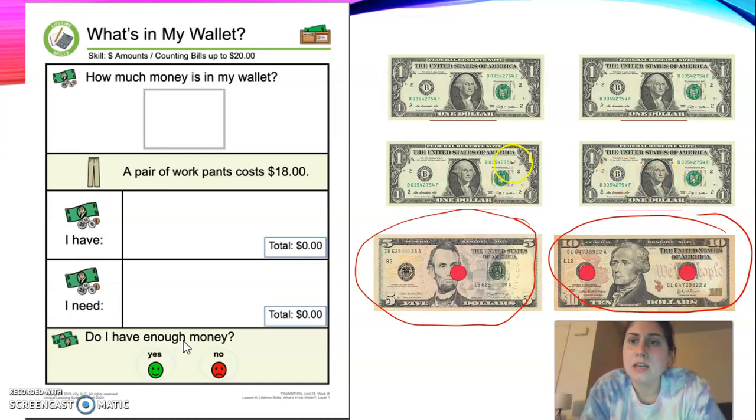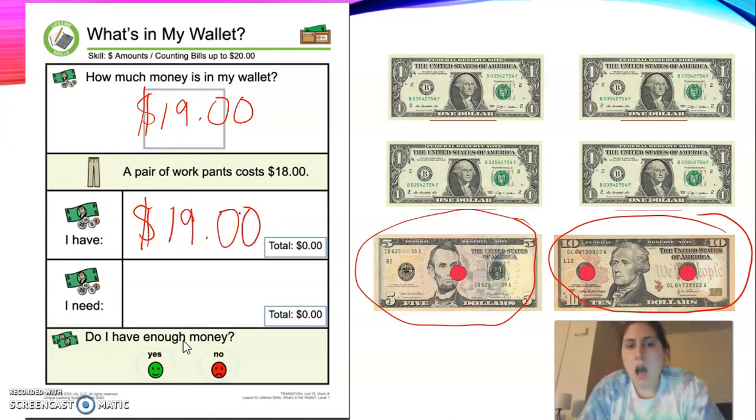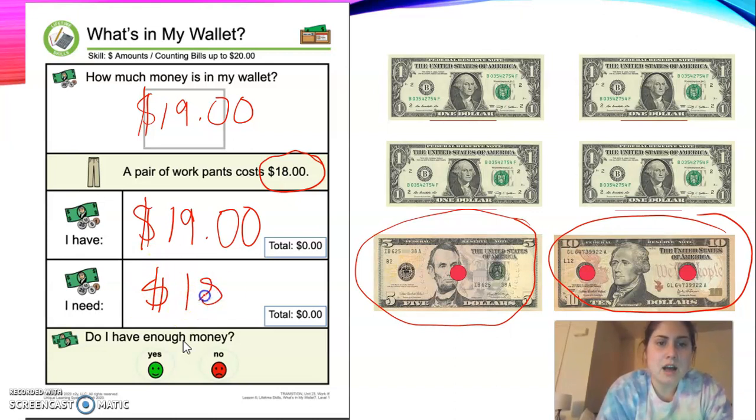So we are going to put nineteen dollars in how much money we have in our wallet and how much money we have. A pair of work pants costs eighteen dollars. So how much money do you need? Let's circle it. Dara, these are cheaper than the ones that we got for you when we were at the outlets.